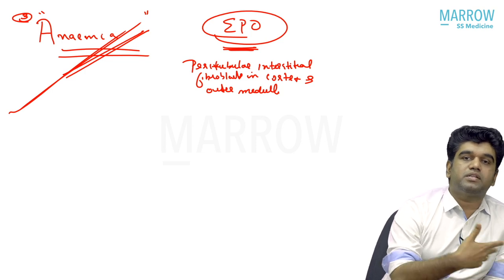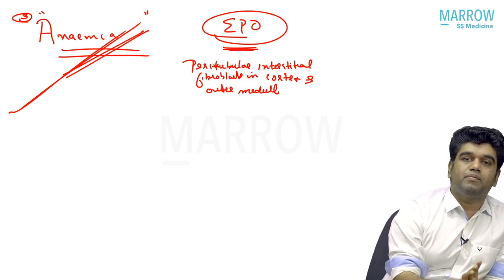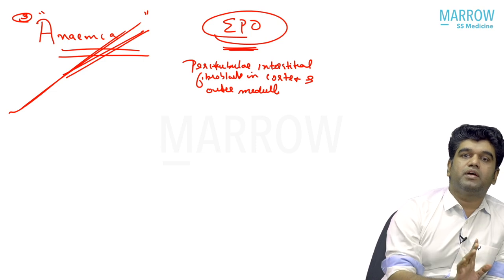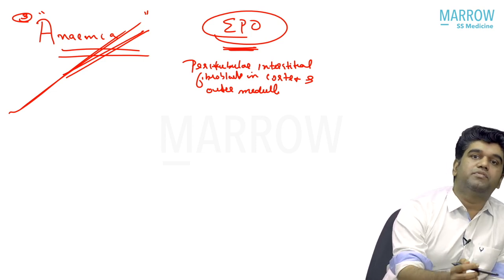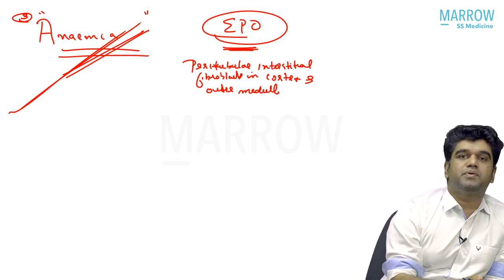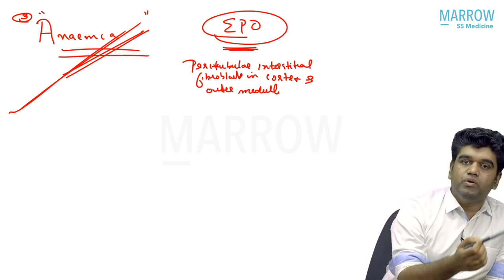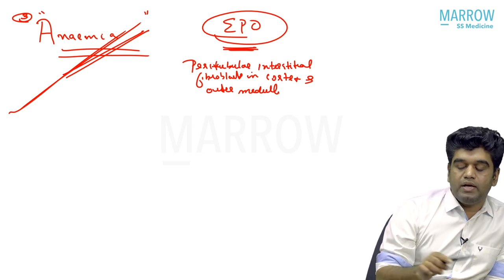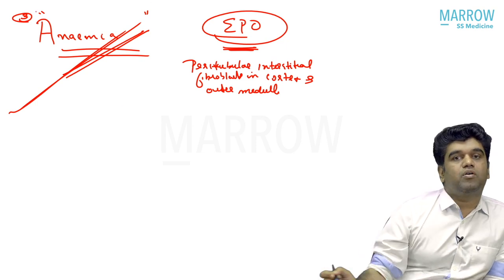A clinical case example: a 35-year-old female posted for nasal polypectomy had hemoglobin of only 6.5 with creatinine of 3. Ultrasound showed bilateral contracted kidneys and urine showed trace albumin. We diagnosed chronic tubular interstitial disease with anemia as part of it. On further workup, the patient was found to have Sjogren's syndrome — working up may reveal an underlying cause.